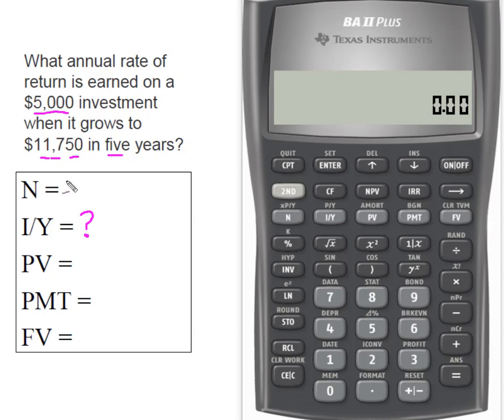So let's start getting our variables together. We know that we're going to grow this for five years. Presently, we have $5,000, and we're not going to make any payments along the way. We're just going to let this money grow for five years. And in the future, at the end of that five years, we're going to have $11,750.